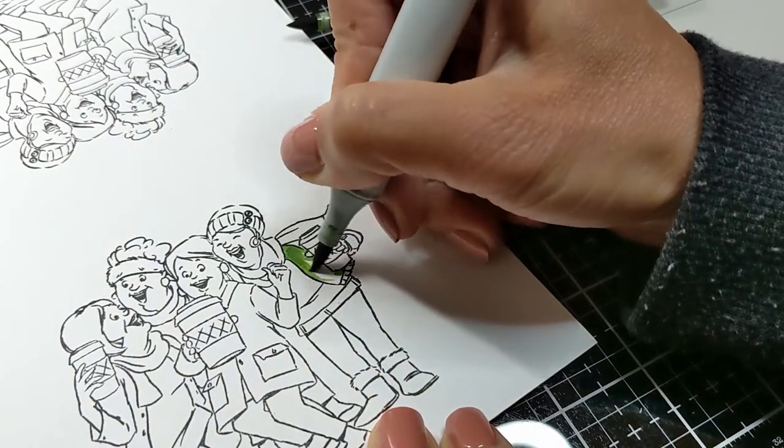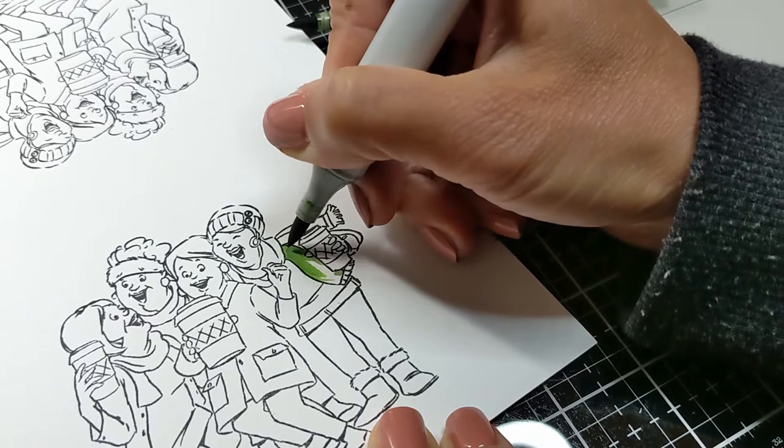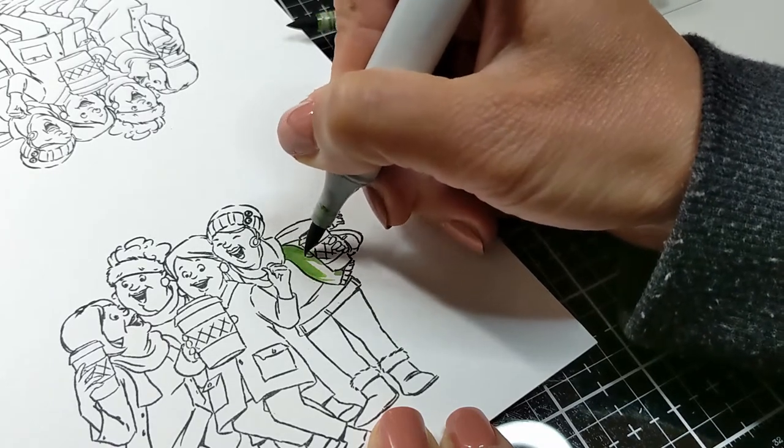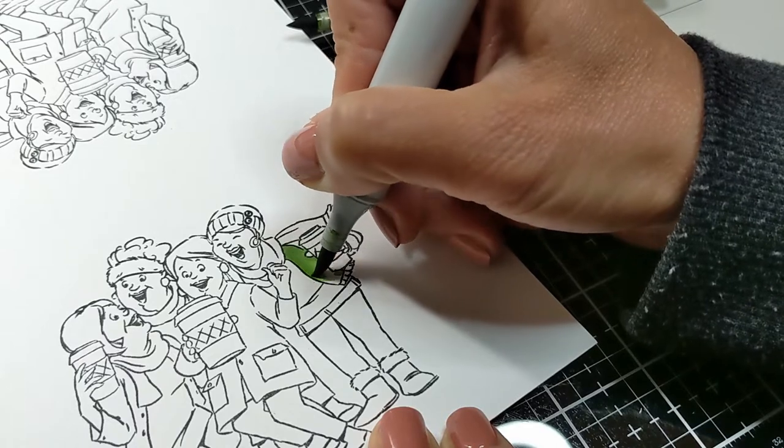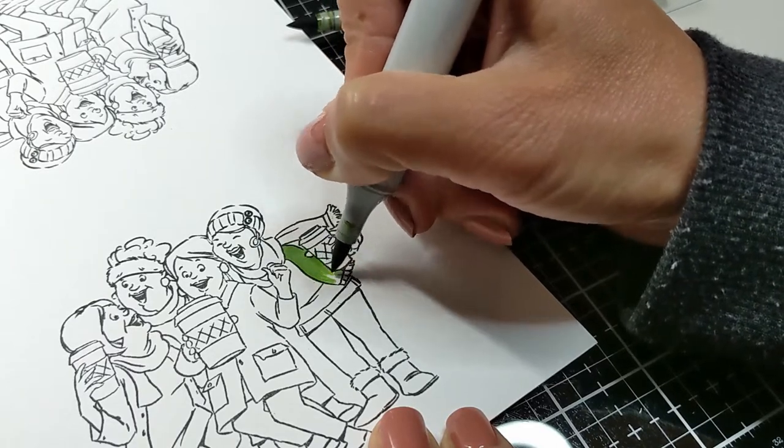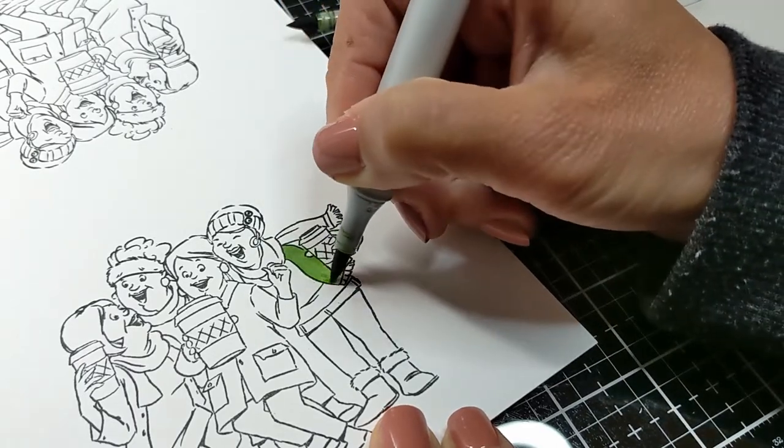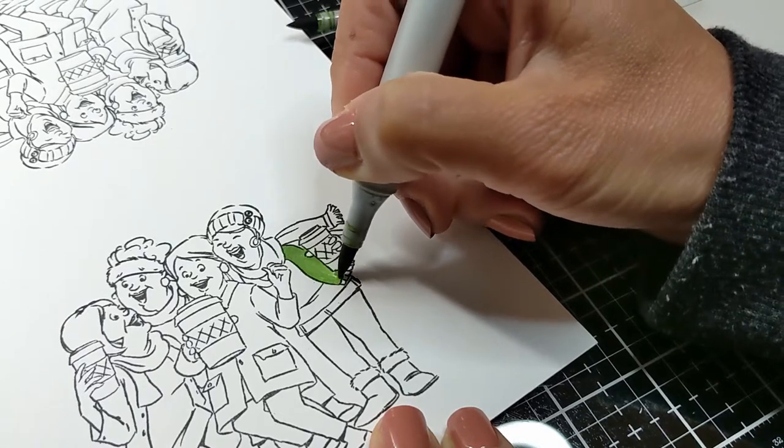You can check my Instagram account - I'm going to link it down below where I usually leave the coloring process. You can also follow my blog; I'll leave that down below too if you want to check the shades I used for the markers.